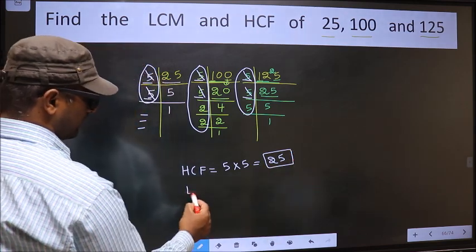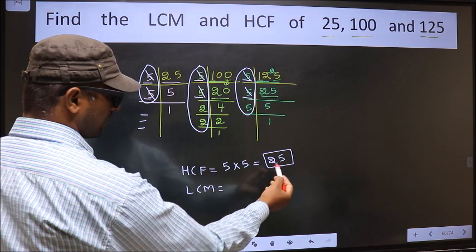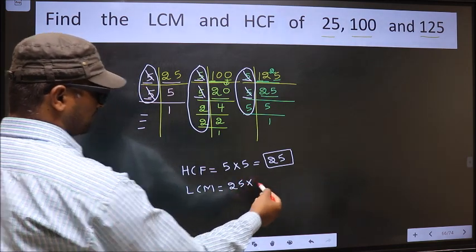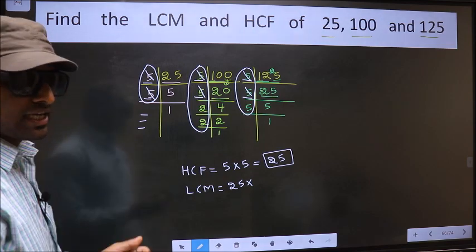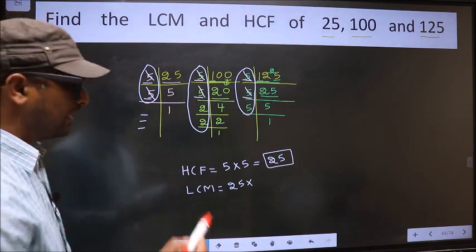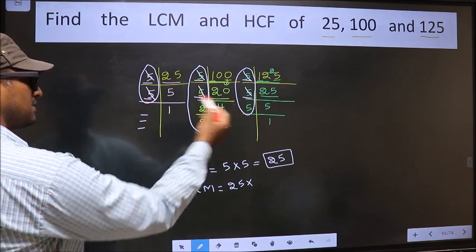Now to get LCM. Whatever HCF we got, to that we should multiply by the numbers which appeared either once or twice in these 3 places.